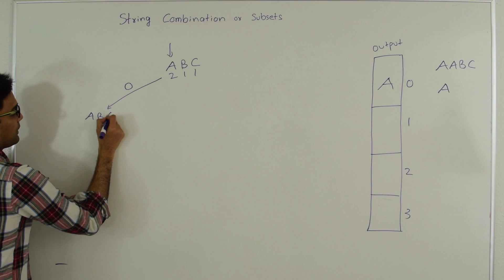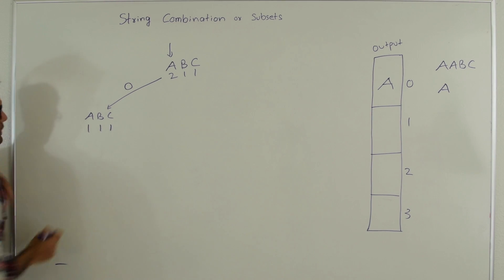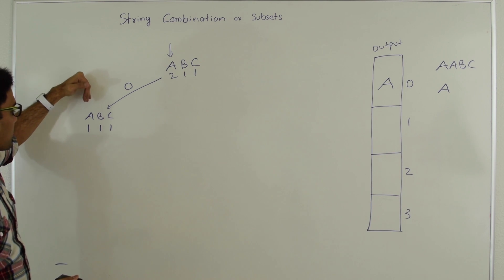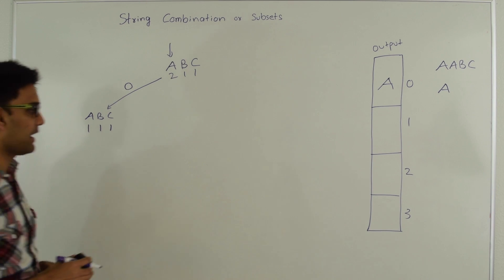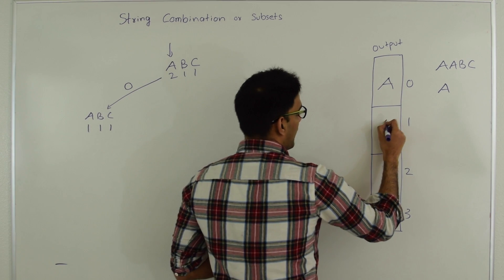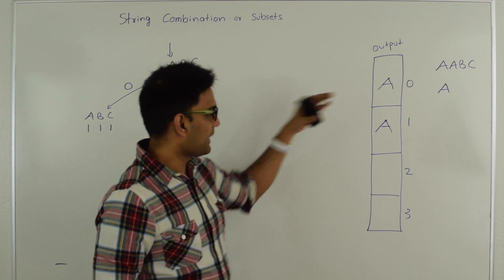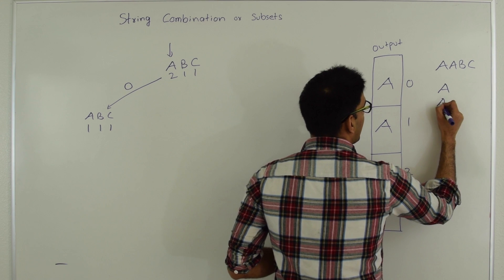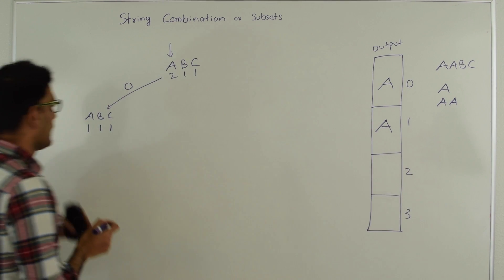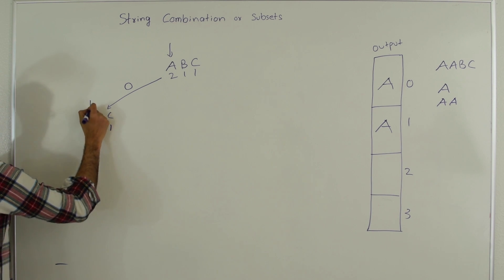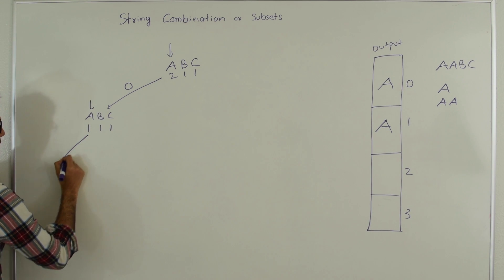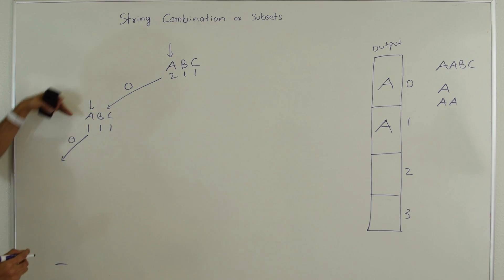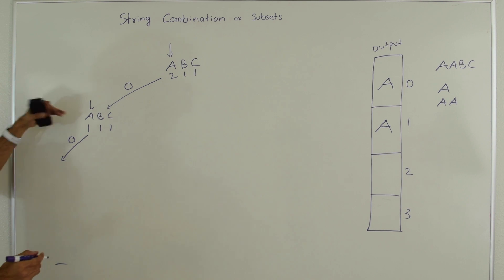So the counts become A:1, B:1, C:1. Starting again from index 0 we look for the first available character whose count is greater than 0 — that's again A. So we put A into the output array and print the contents till index 1, printing AA. Then we go into the recursion again, passing index 0 saying look for the first available character from index 0, and decrement the count of A.